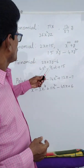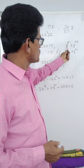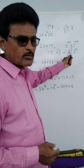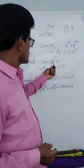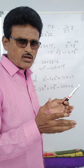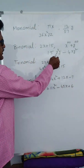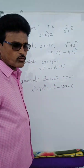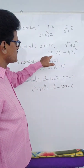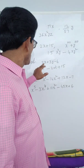Binomial means two terms. Example: 2x is one term, 15 is another term — only two terms, it is a binomial. Here x¹⁰⁰ plus y¹⁰⁰ — this is one term and this is the second term. Terms are differentiated by plus symbol or minus symbol. Example: 1.5x²y minus 4xy² — first term and second term. This is also a polynomial with variables x and y.